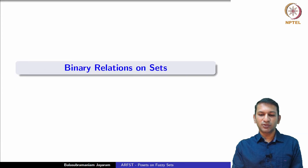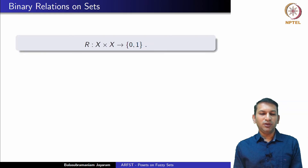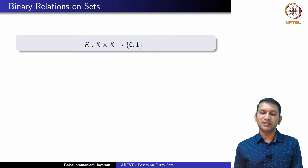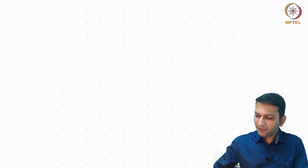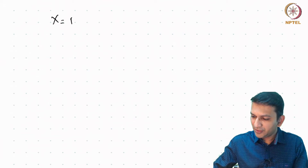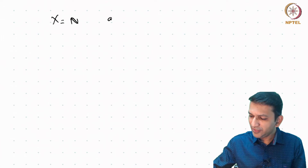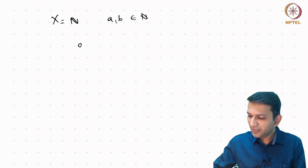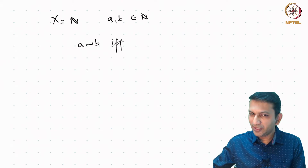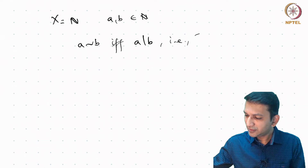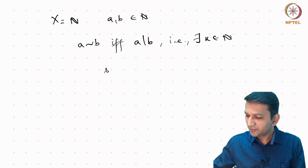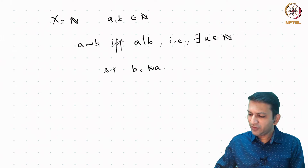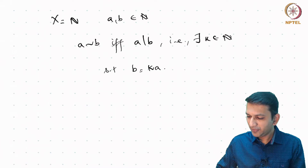Let's begin with binary relations on sets. A binary relation on a set X can be thought of as a function from X cross X to the set {0,1}. For instance, if we consider X to be the natural numbers, we can define for a given pair (a, b) of elements of N a relation as follows: a is related to b if and only if a divides b. That is, there should exist a k in N such that b can be written as k times a.